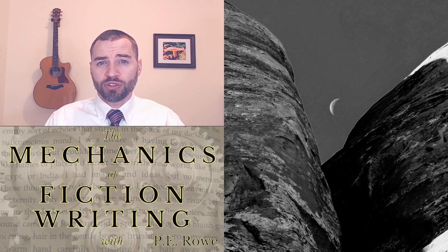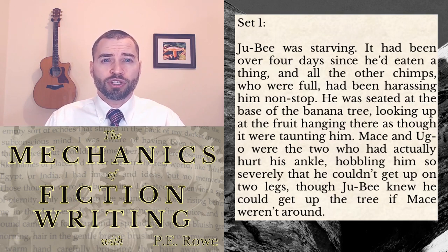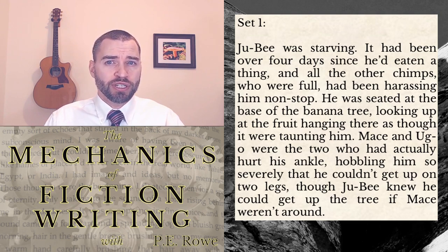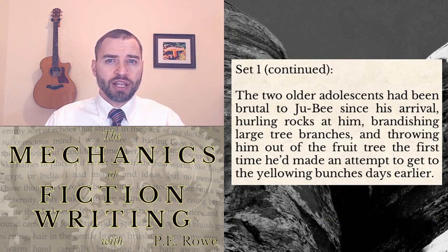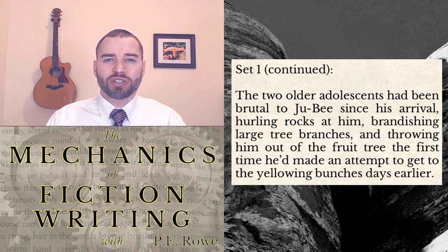First, I'm going to begin with a few sets of cues for you to simulate. Set 1. Juby was starving. It had been over four days since he'd eaten a thing, and all the other chimps who were full had been harassing him non-stop. He was seated at the base of a banana tree, looking up at the fruit hanging there as though it were taunting him. Mace and Uggo were the two who had actually hurt his ankle, hobbling him so severely that he couldn't get up on two legs, though Juby knew he could get up the tree if Mace weren't around. The two older adolescents had been brutal to Juby since his arrival, hurling rocks at him, brandishing large tree branches, and throwing him out of the fruit tree the first time he'd made an attempt to get to the yellowing bunches days earlier.